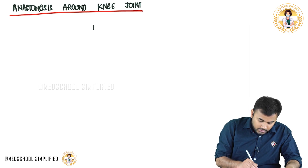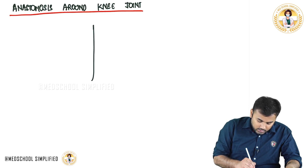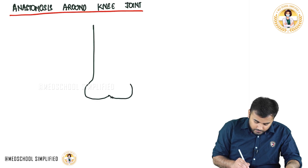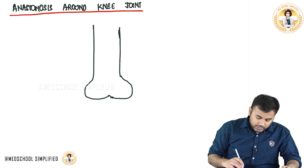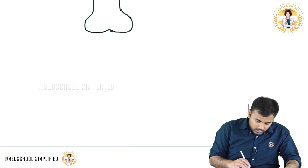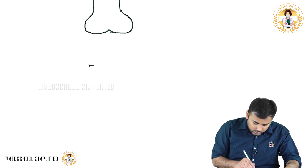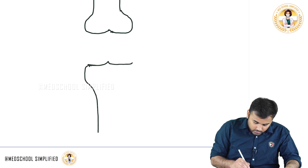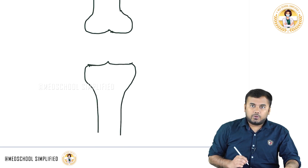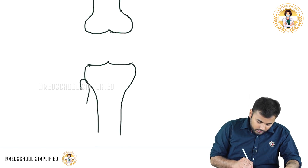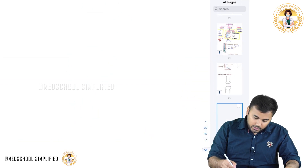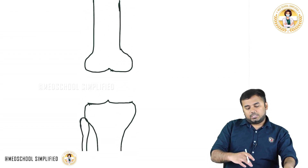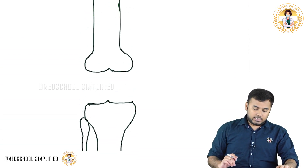First, this is the femur. Here you have got the femur. Next, let me draw the tibia a little bit apart — this is your tibia. And here you have got your fibula. So we have got tibia as well as fibula. We have intentionally made this gap to discuss the arteries over here.